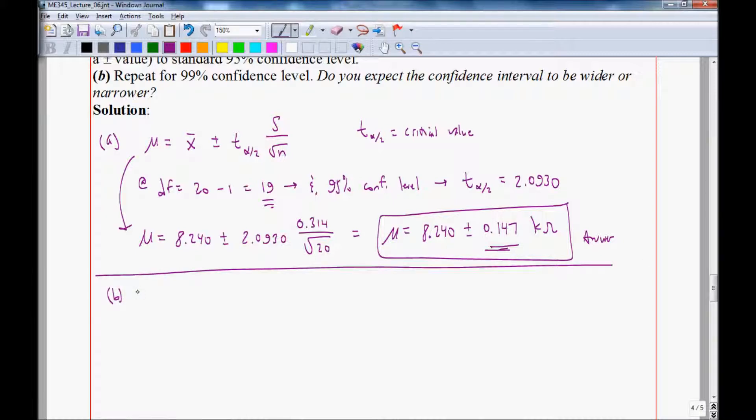So let's repeat this at 99% confidence. So alpha is 0.01, and either from the table or from Excel, we get T alpha over 2 is 2.8609. We can verify that.